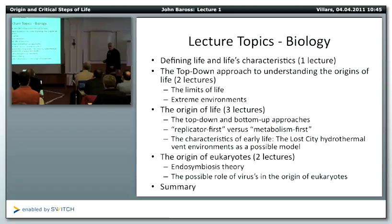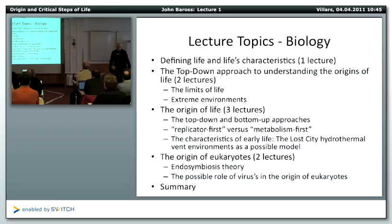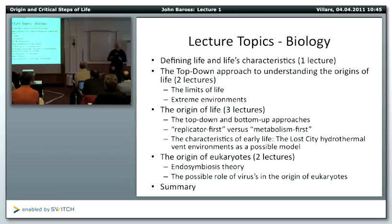The origin of life community is basically divided into two groups. The replicator first group — they want something that divides right away — and this is the RNA world group. And then there's the metabolism first group: there's no way you can make RNA unless you have some kind of way to build energy and make the organic compounds. I don't belong on either one of those camps; I belong on a camp that brings everything together.